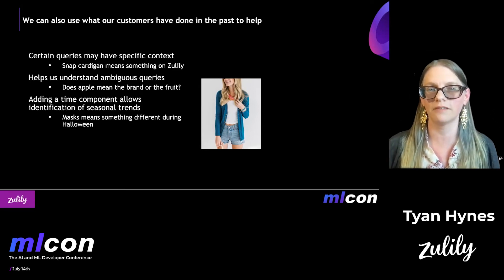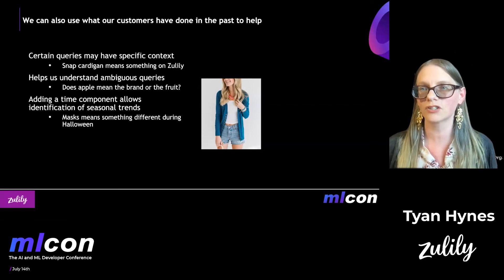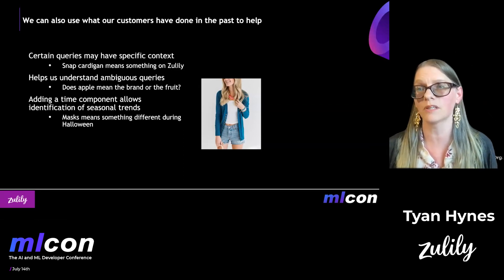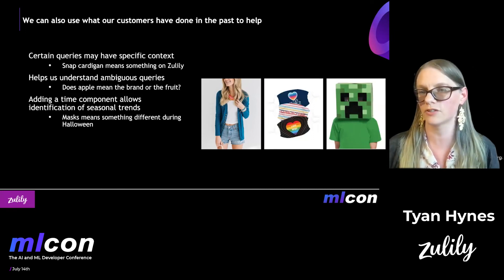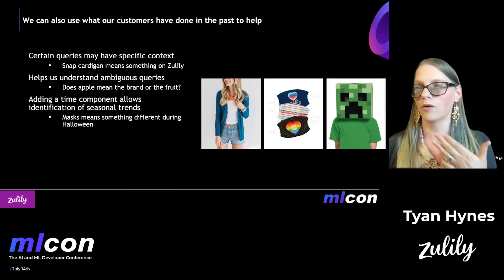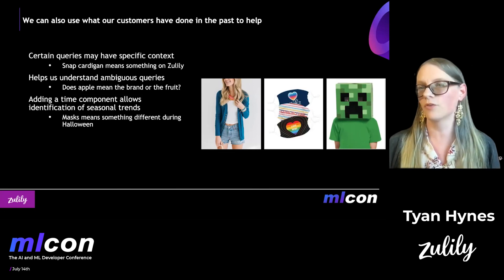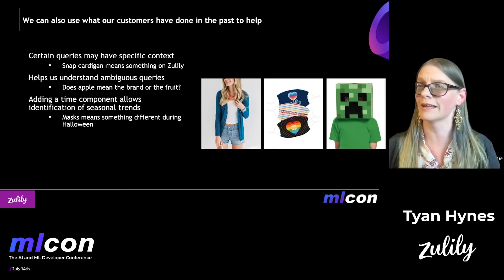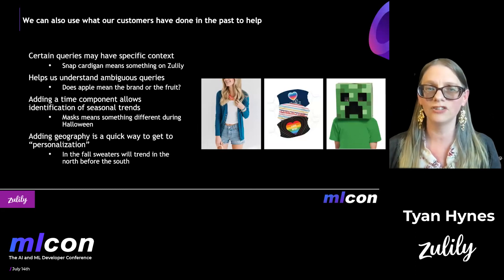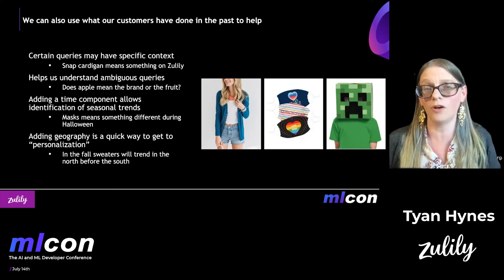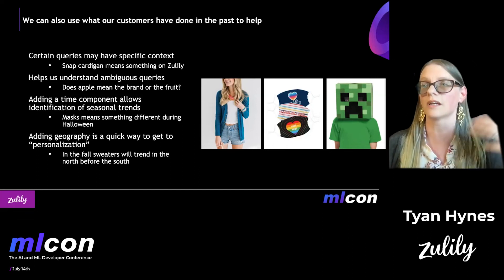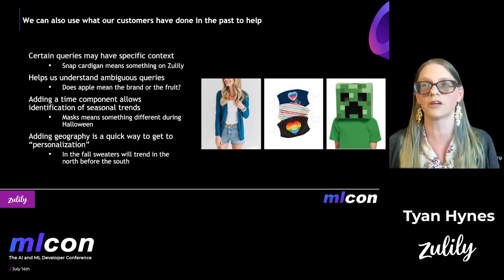Adding a time component allows us to identify seasonal trends. Masks during Halloween mean something a little different, and we can adjust the product selection we provide during Halloween to make sure we're giving customers what they want. Here are two examples of what you would get from a mask search — one very relevant right now with non-medical masks, and another showing a Minecraft costume mask for Halloween. Adding geography is another quick way to get what we call quick personalization — in the fall, sweaters will trend in the North before they do in the South, so we can tailor our selection based on where the person is in the country.